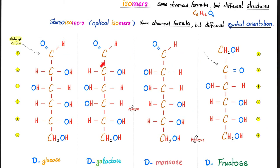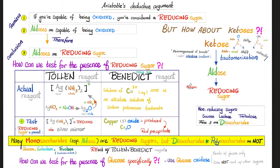Here are aldose sugars — but fructose is a keto sugar. So how can we test for the presence of a reducing sugar, like these monosaccharides, especially the aldoses?